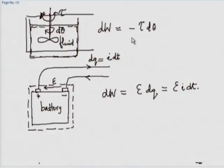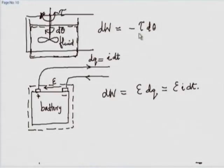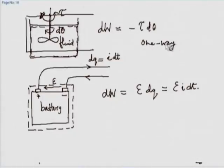What about the stirrer? I try to stir the fluid one way and the torque is opposing it. I try to move the fluid the other way and the torque still opposes it. So if dθ is positive, torque is in one direction; if dθ is negative, torque is in the other direction. In any case, this work interaction will be negative. I cannot put the stirrer in the fluid and say 'fluid, you stir the stirrer' — that is just not possible. This is a one-way mode of work, whereas the piston-cylinder is a two-way mode.